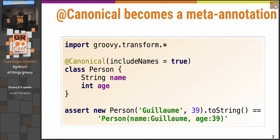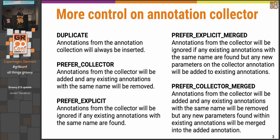We have a system called meta-annotations, which allows you to put together several annotations and give the combination a new name. We have a @ToString annotation, an @EqualsAndHashCode annotation, and together with the @TupleConstructor annotation, those combine to form @Canonical. This meta-annotation system is called the annotation collector.